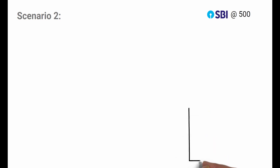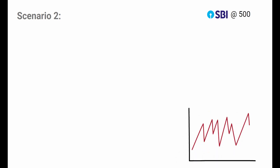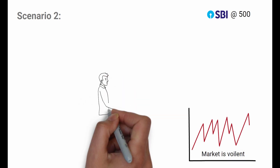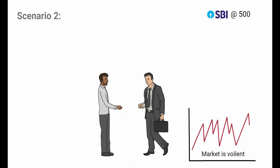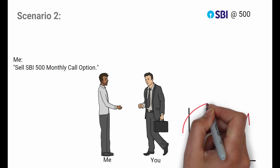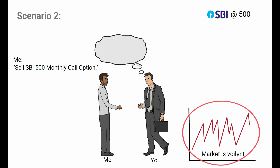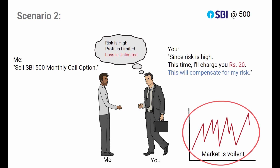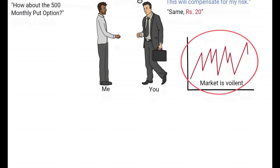Scenario 2: SBI is at 500 but the market is violent. Every day SBI is gapping up or down by one or two percent — SBI moved 10% in the last three days. Now if you ask me to sell you the SBI 500 strike monthly call option, the risk is high. If you sell the call and SBI moves down, you make only limited premium, but if SBI moves up you can lose a lot. This is scary, so you would charge 20 rupees to compensate for the risk. The same logic applies for the put option.